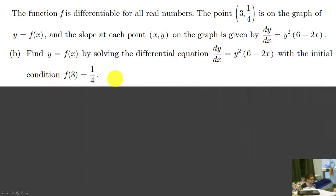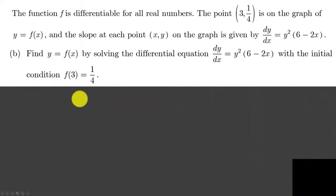Part B: find y equals f of x by solving the differential equation dy/dx equals y squared times (6 minus 2x), with the initial condition f of 3 equals 1/4. This is going to be awesome. We love differential equations because it's so many points.